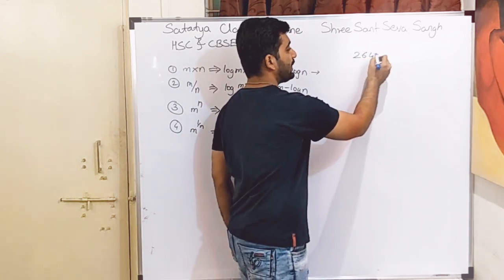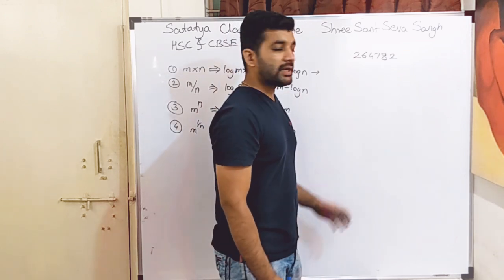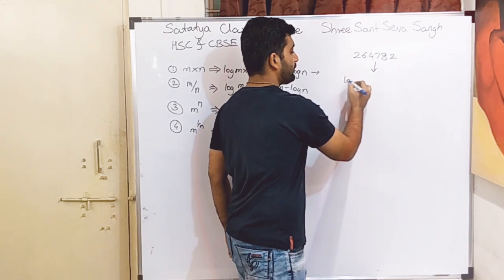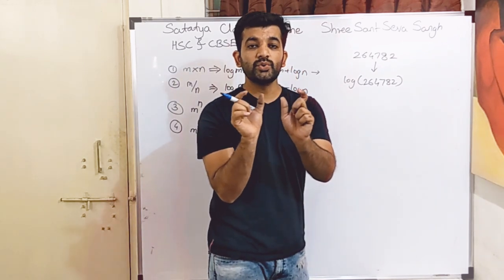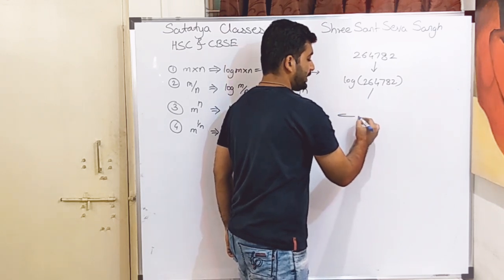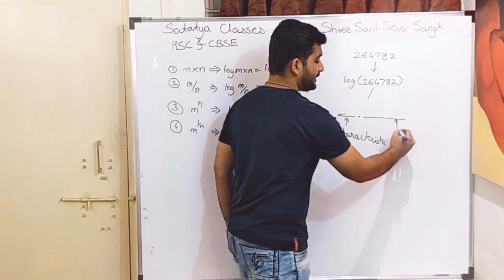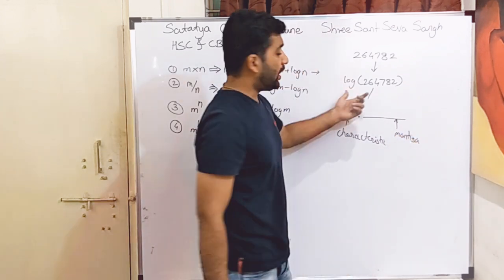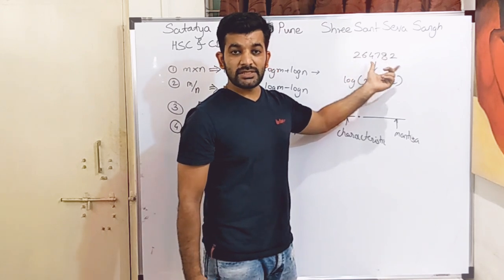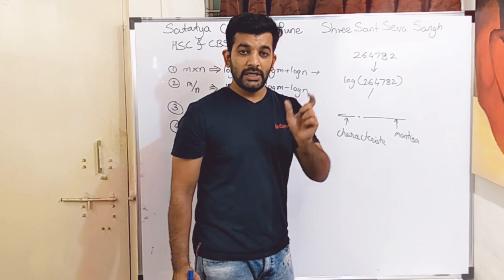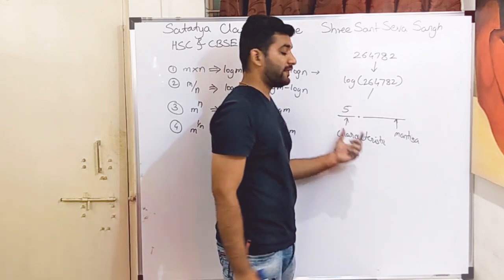Let's take a six-digit number like 2478262. We have to convert this number into log form. When converting, we write it in two different parts: the characteristic part and the mantissa part. To decide the characteristic part, we count the number of digits — there are six digits — and subtract one. So six minus one equals five. Five is written in the characteristic part.